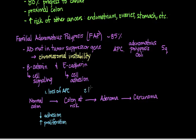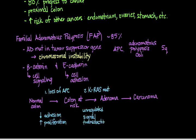The next step, in which the at-risk colon progresses to form an adenoma, involves a mutation in KRAS. The KRAS gene encodes a GTPase involved in cell signaling, and a mutation in this gene leads to unregulated intracellular signal transduction. The final step — from adenoma to cancerous carcinoma — is loss of the tumor suppressor gene P53, which leads to increased tumorigenesis.